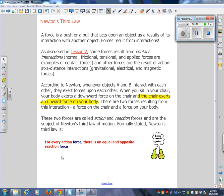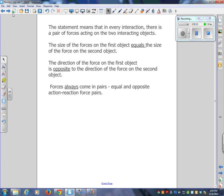For every action force, there is an equal and opposite reaction force. This statement means that in every interaction, there is a pair of forces acting on the two interacting objects. The size of the forces on the first object equals the size of the force on the second object. They are equivalent. The direction of the force on the first object is opposite to the direction of the force on the second object. Forces always come in pairs, equal and opposite action-reaction force pairs.